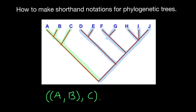This comma stands for the root here, and we open parenthesis again and we have species D and E. Next we have species F and G, so we open parenthesis again and we have F and G.